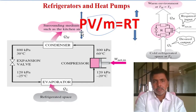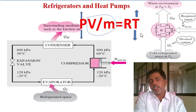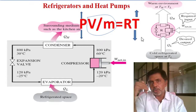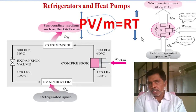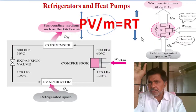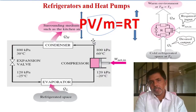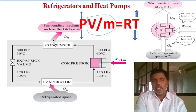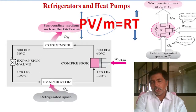Since V/M is constant, increasing pressure means temperature will increase, and decreasing pressure means temperature will decrease. So we increase pressure when we want to reject heat, and decrease pressure when we want to absorb heat. That is the basic principle. The commercially available vapor compression refrigeration cycle consists of a compressor, condenser, expansion valve or throttling valve, and an evaporator.